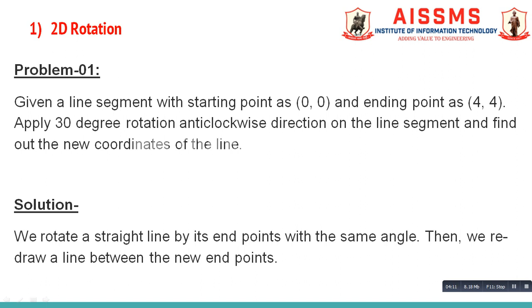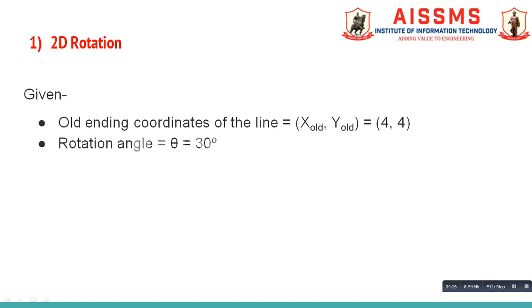Now let us see solution for this problem. We rotate a straight line by its end points with the same angle. Then we redraw the line between new end points. Here old ending coordinates of the line X_old, Y_old and rotation angle theta is given to us in our problem statement. So we just note it down from our problem statement.